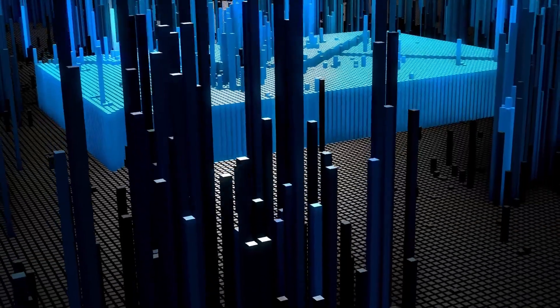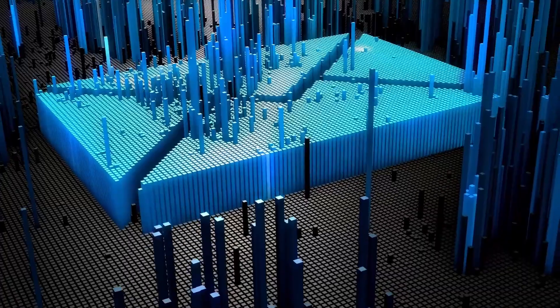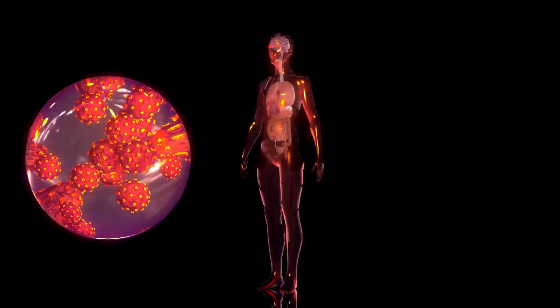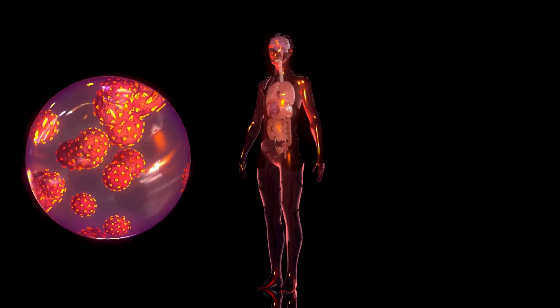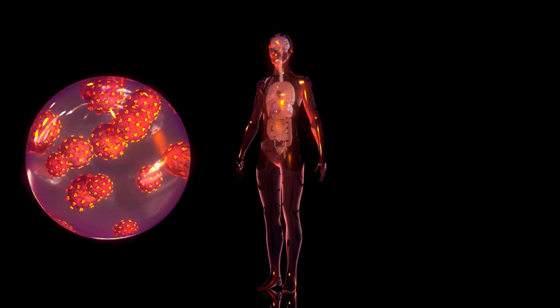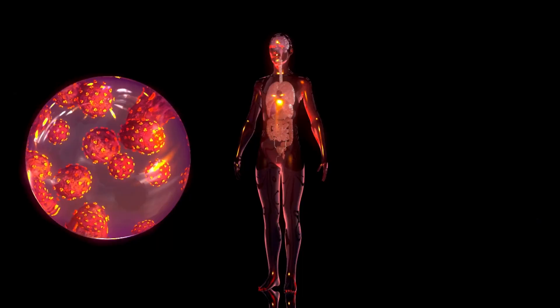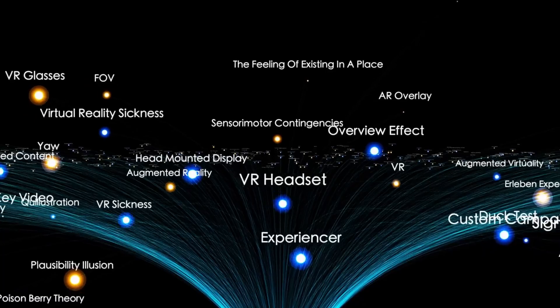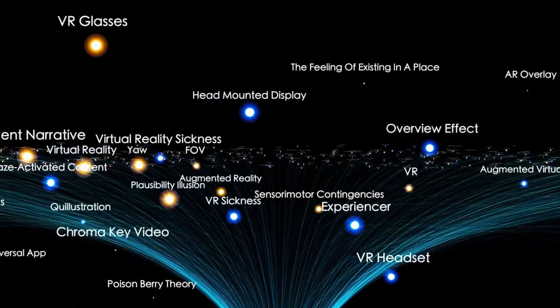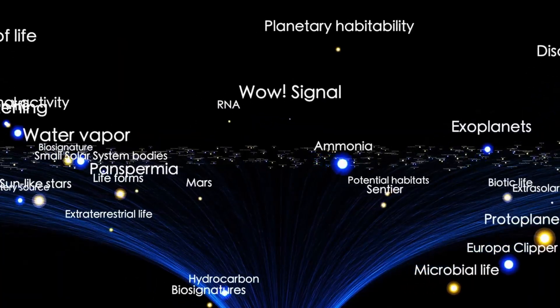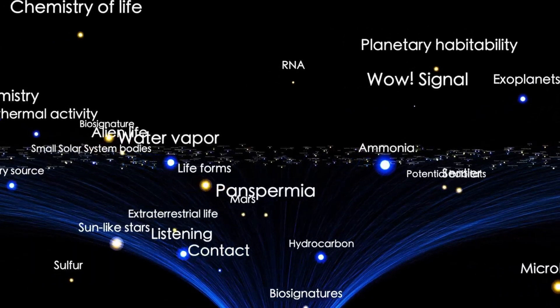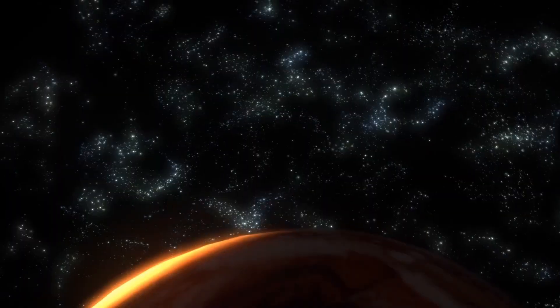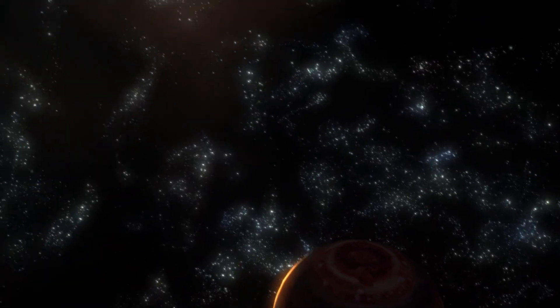Today, 3i Atlas is still out there, slowly adjusting its position, crossing deeper into our solar system like a needle slipping through invisible seams. It's not coming fast, it's not blazing like a comet, it's gliding, patiently, precisely, like it knows exactly how to navigate through our cosmic backyard. Based on current projections, it will pass its closest point to Earth's orbital path in December 2025.